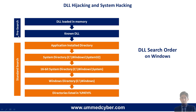Whenever we execute or try to start a software, it first searches for the DLL in memory, then moves to the standard search order. That means it first goes to the application install directory, then tries to find it in the system directory (System32), then the 16-bit system directory, then the Windows directory (C:\Windows), and lastly the directories listed in the PATH environment variable.